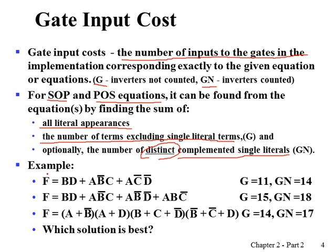For the first equation F, the literal cost is 8. The gate input cost is the literal cost plus the number of terms. We have 3 terms, so gate input cost is 11. For gate input cost with NOTs, we add the number of distinct complemented single literals: not B, not C, not D — that's 3. So we add 3 to 11, giving gate input cost with NOTs as 14.